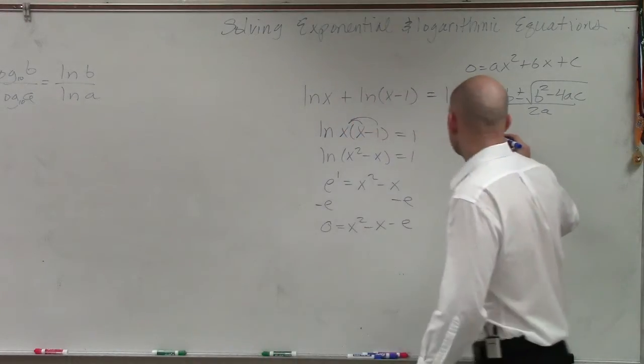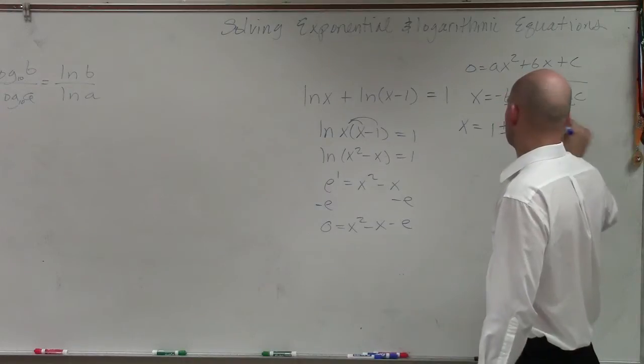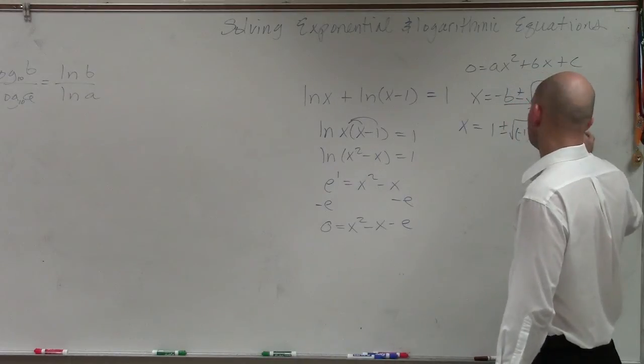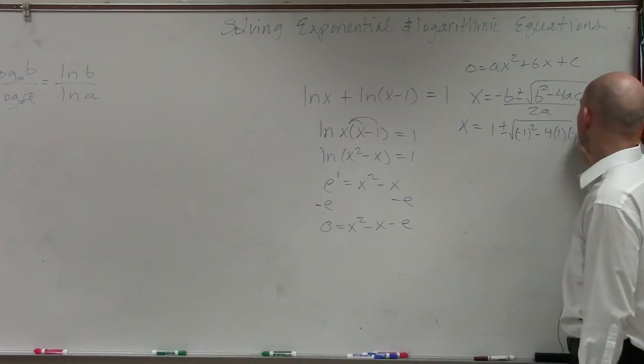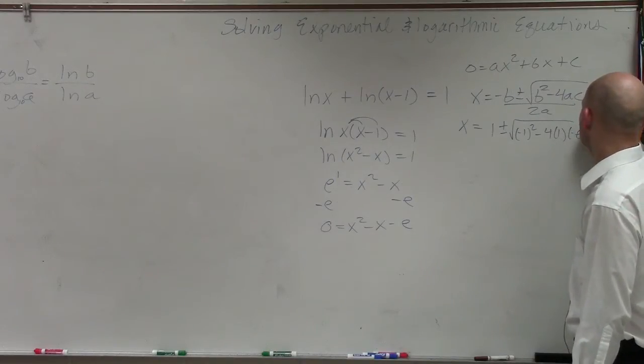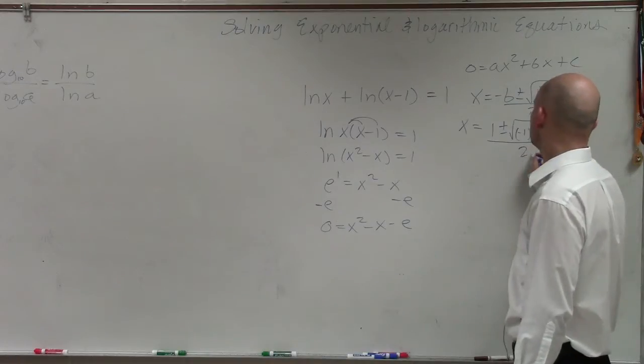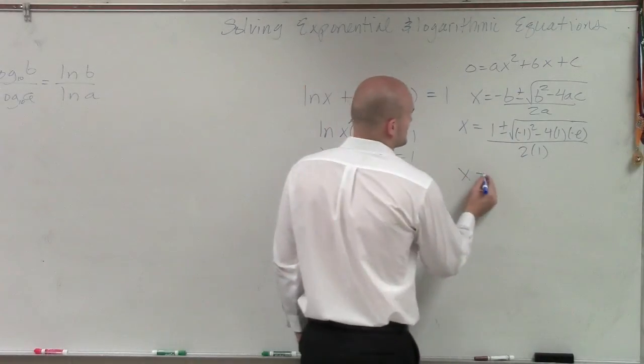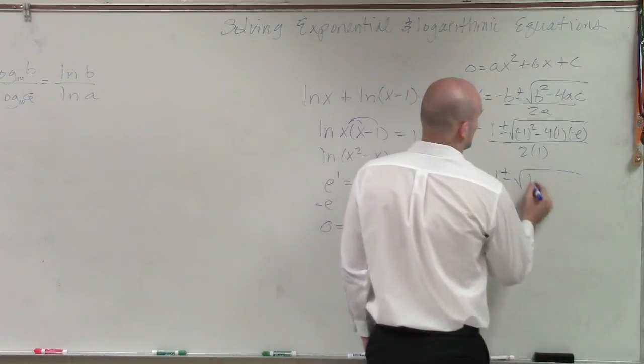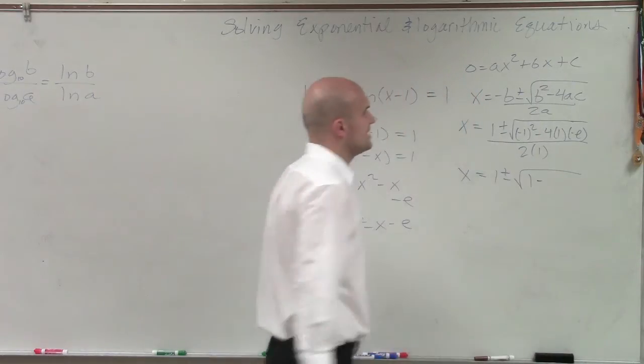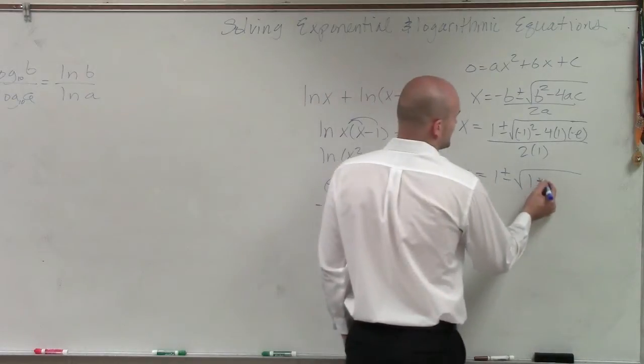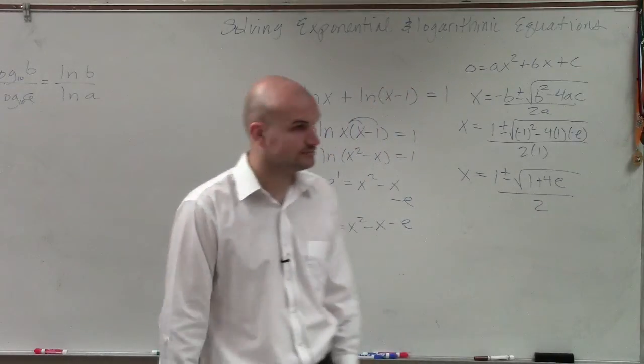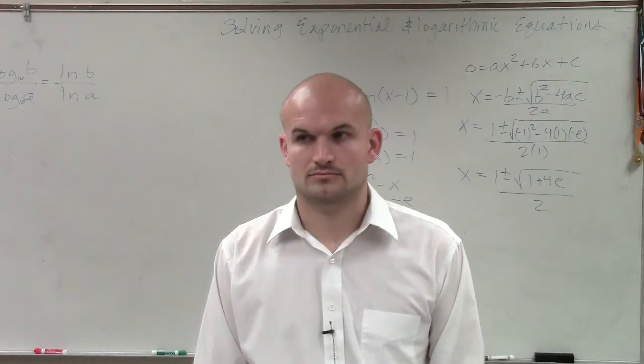Now I'm going to simply plug these in here. x equals opposite of b, which is 1, plus or minus negative 1 squared minus 4 times 1 times c, which is negative e. Why do I keep writing my e's as a 6? Divided by 2 times a, which is 1. So x equals 1 plus or minus the square root of 1 minus negative 4 times e. It's just going to be a positive 4e divided by 2.